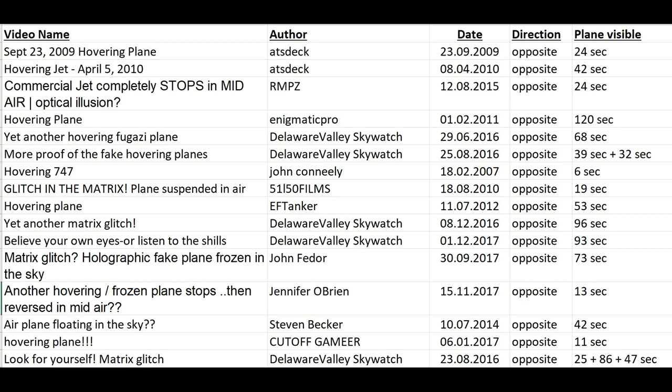Of course, that depends on the distance and speed of the plane and the car. You can also see very well on this list that all planes fly in the opposite direction, because if they flew in the same direction as the car, they cannot hover. I mean, of course, they cannot look like they are hovering.